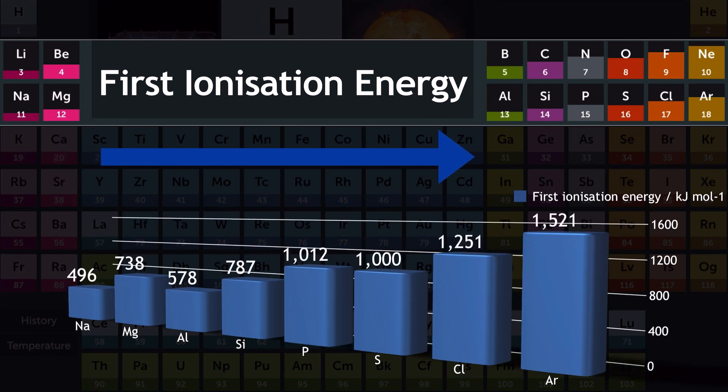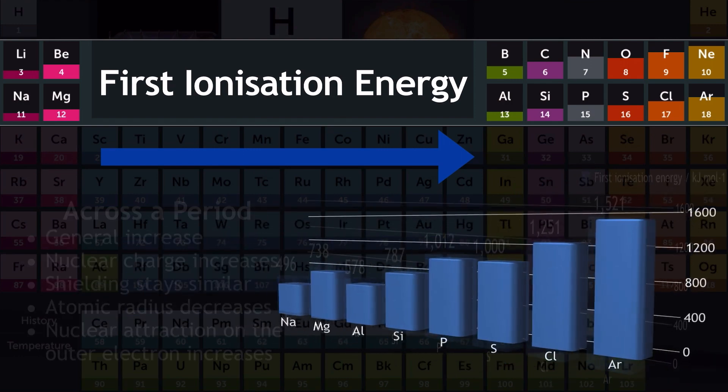Moving on to first ionization energy trends. First ionization energy is defined as the amount of energy required to remove one mole of electrons from one mole of gaseous atoms. The first trend we're going to look at is across the period — I'm going to use period 3 for this example. Going across the period, you can see from the chart that there is a general increase in first ionization energy values.